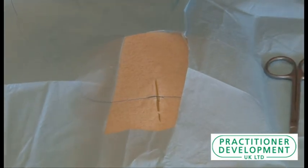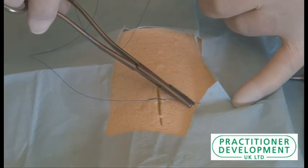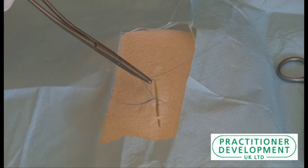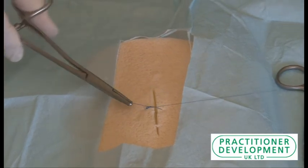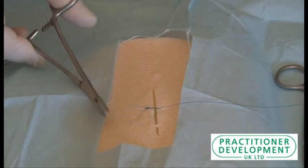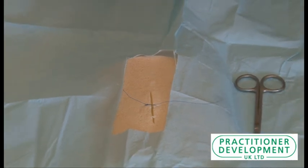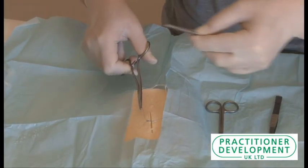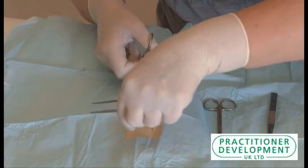And the last one, once round again, grab the end and pull. We're then going to trim, and that is your interrupted suture which has been put into the middle of the wound.